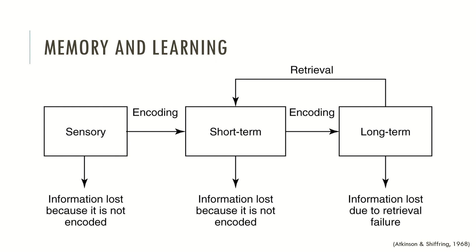However, when we don't encode and we don't rehearse, all information tends to be lost. In sensory memory, information is typically lost because it's not encoded. In short-term memory, information is typically lost because it is also not encoded. And if we don't increase the encoding of information during these stages, typically in long-term memory the information is lost through retrieval failure.